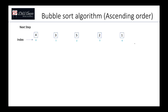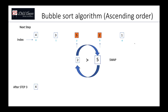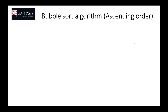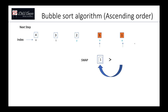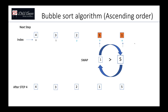We continue comparing the next two elements: five and two. Five is greater than two so we swap — the array looks like [4, 3, 2, 5, 1]. Then we compare the last two elements: five and one. Five is greater than one so we swap. At the end of this first pass, the array looks like [4, 3, 2, 1, 5].